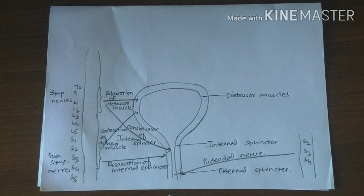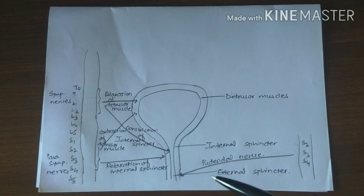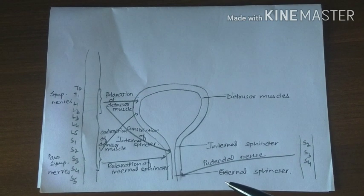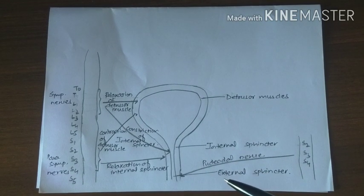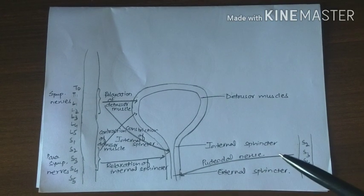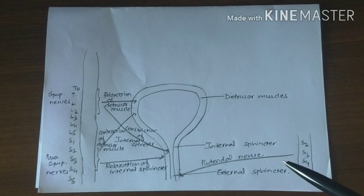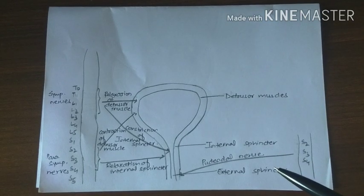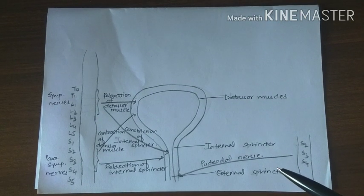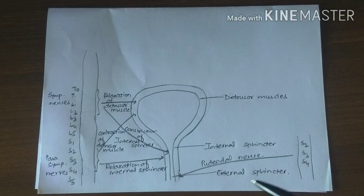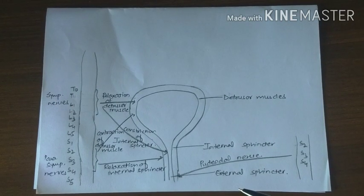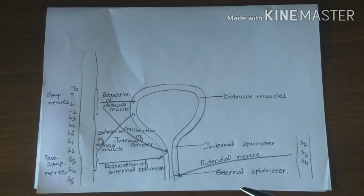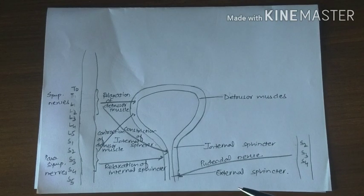The external urethral sphincter is supplied by the sensory pudendal nerve. The pudendal nerve arises from segments S2, S3, and S4, and its function is to maintain tonic contraction of the external urethral sphincter. During micturition, the pudendal nerve is inhibited, resulting in voiding of urine.